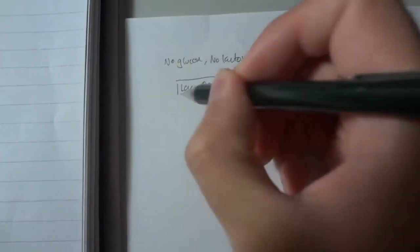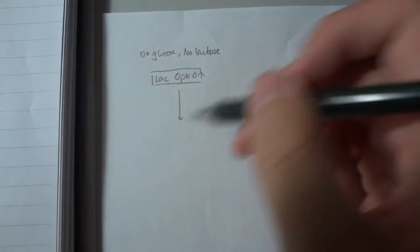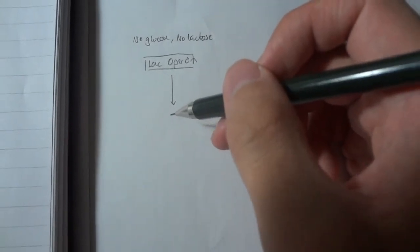Okay, here's a flow chart of how the lac operon works. Let's say initially that there's no glucose and no lactose. Under these conditions, the lac operon is not expressed.